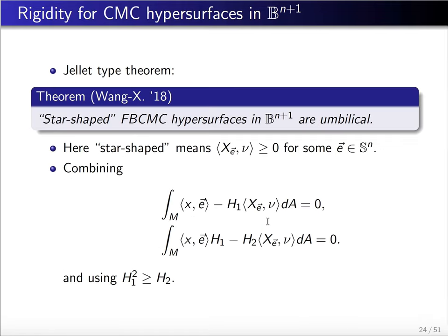We proved a Jellet-type theorem, which says that star-shaped free boundary CMC hypersurfaces in a ball are umbilical. With star-shapedness and the topology fixed to be a ball type, it is also embedded. But we do not assume that the hypersurface lies in a half-ball or that the boundary lies in a hemisphere.